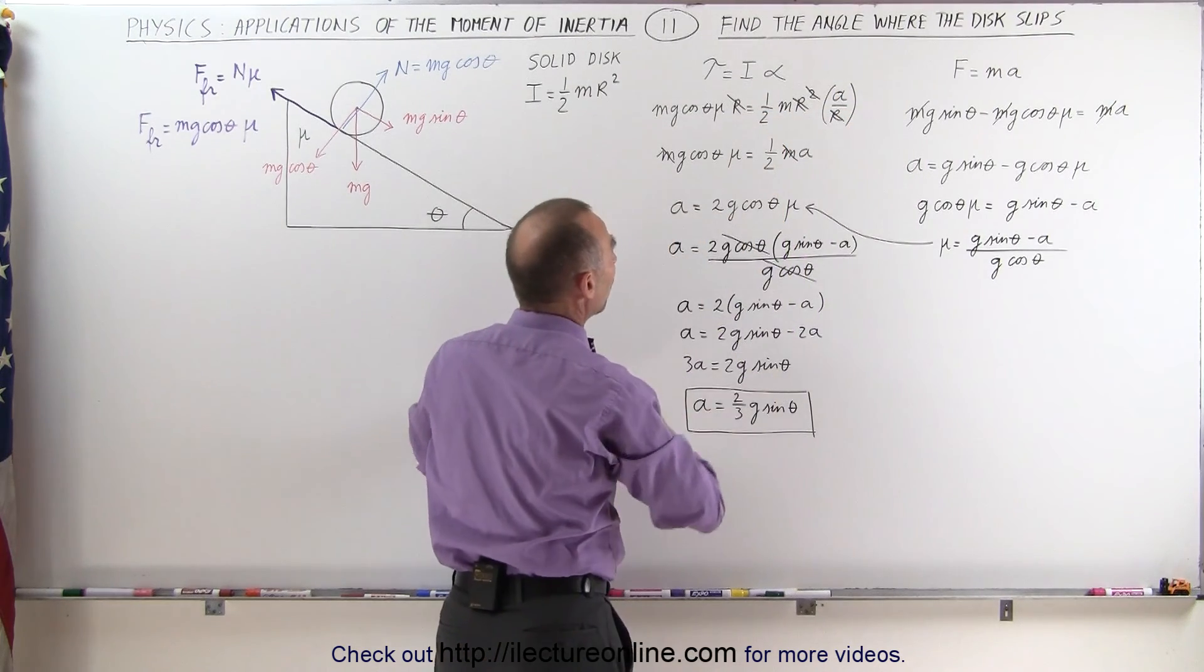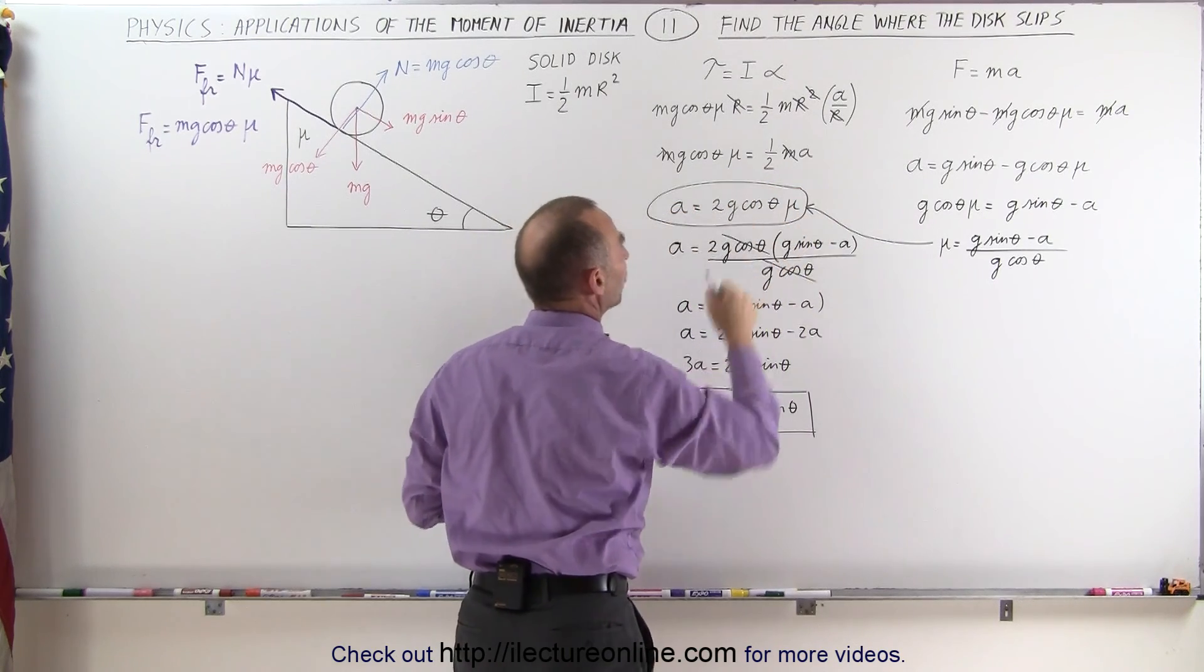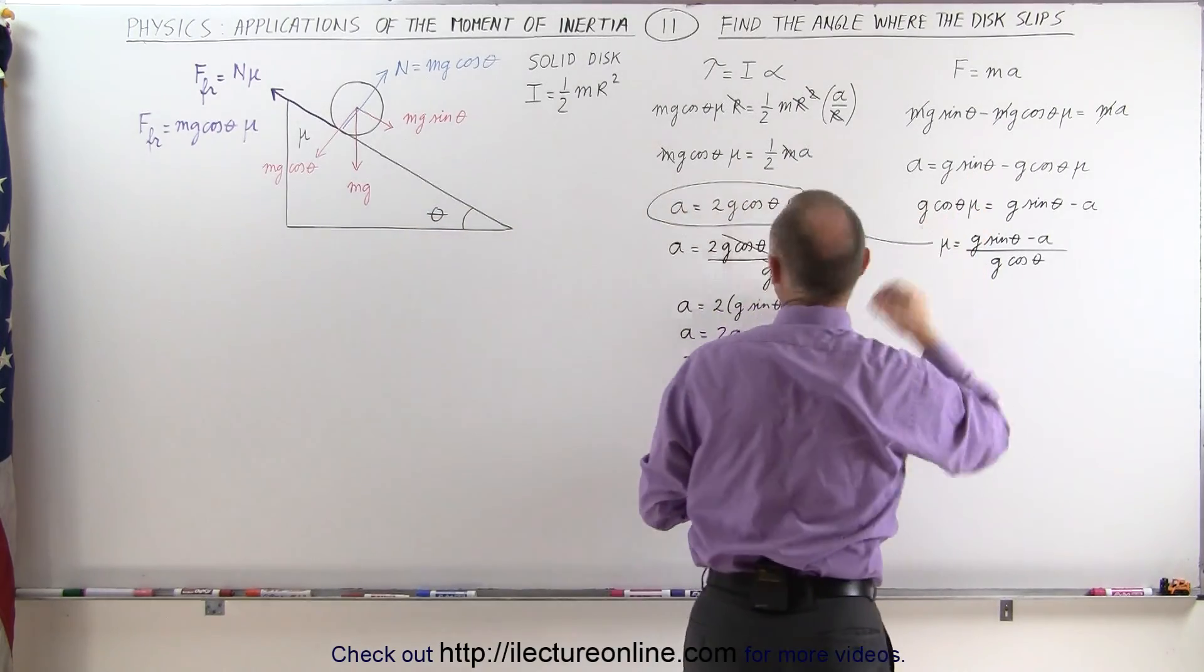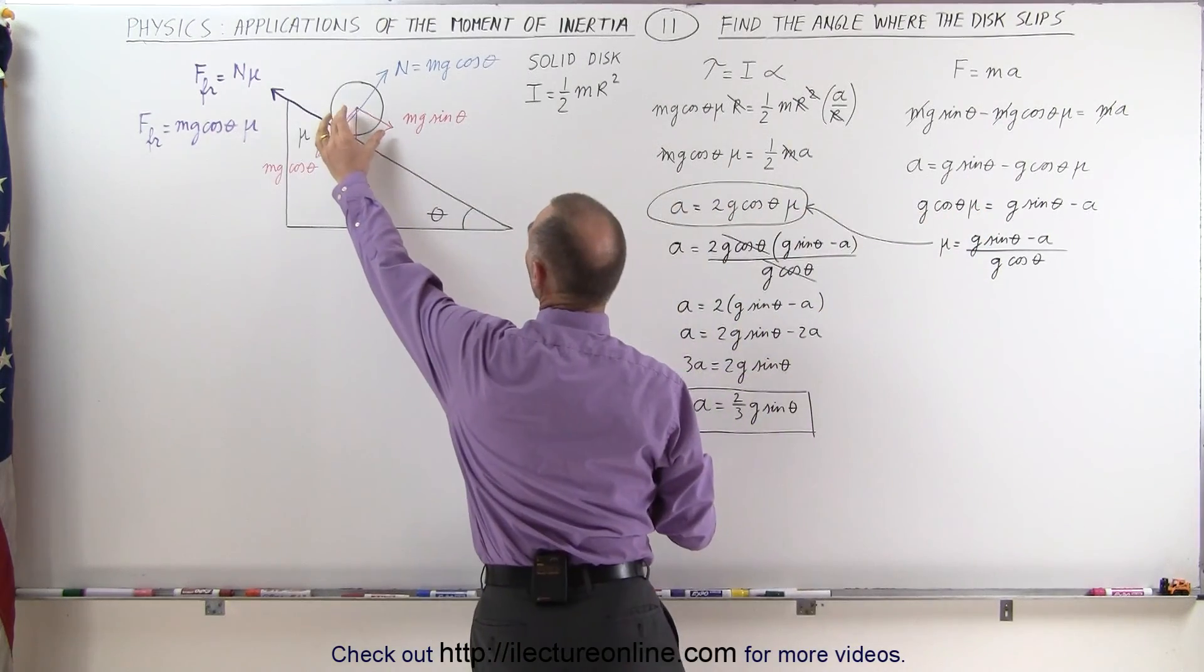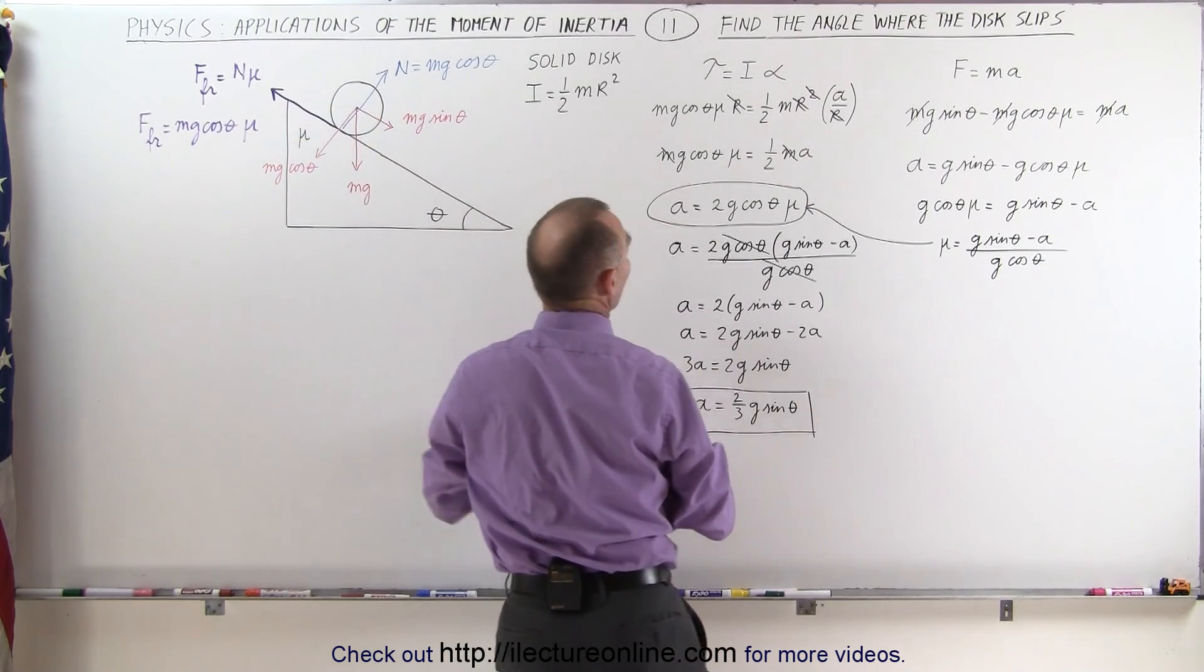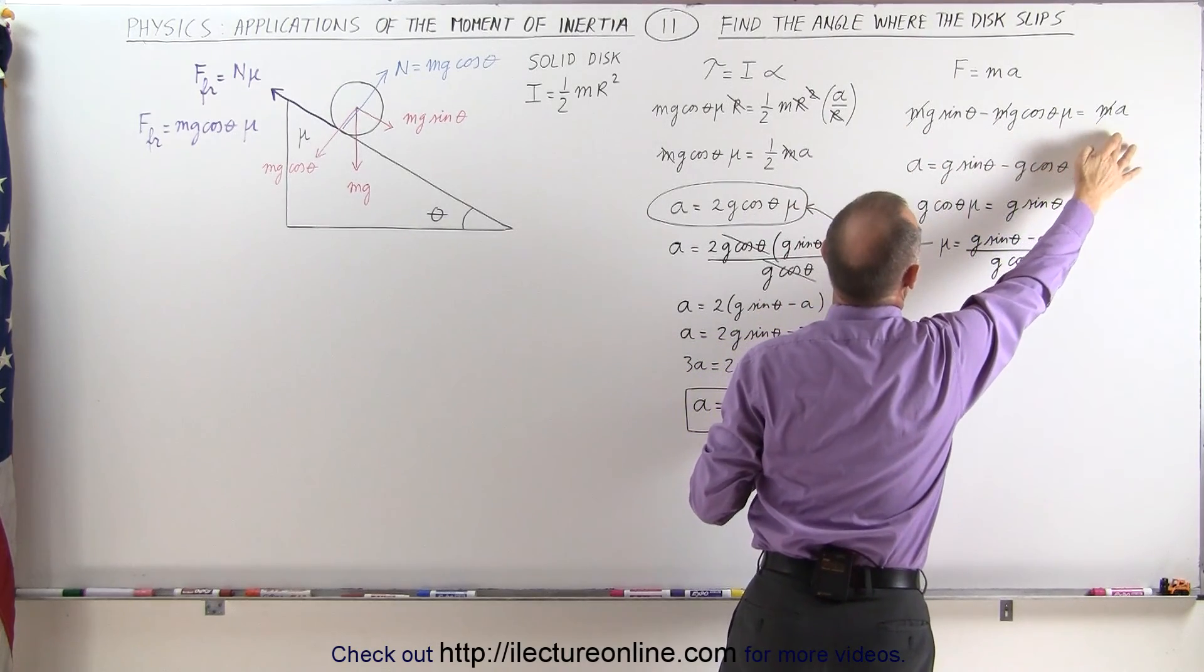When we simplify that, we end up with this equation right here where acceleration is equal to 2g cosine theta times mu. We then also want to solve the equation F equals ma. We have the force pulling the cylinder down the incline, the friction force opposing that force, so we have Mg sine theta minus the friction force equals the mass times acceleration.